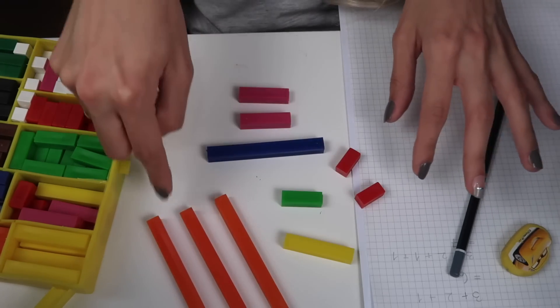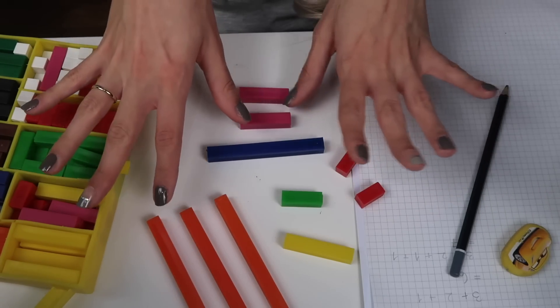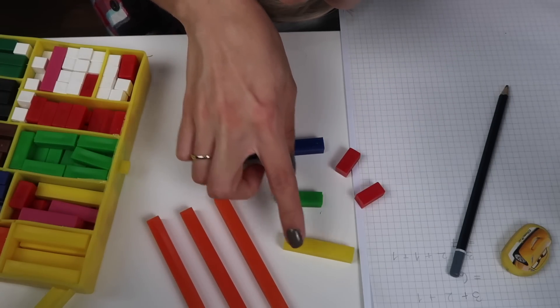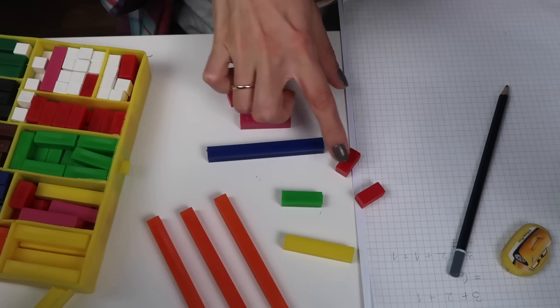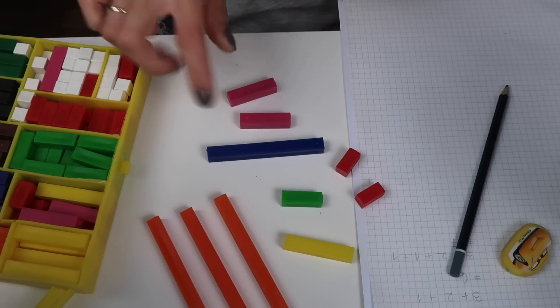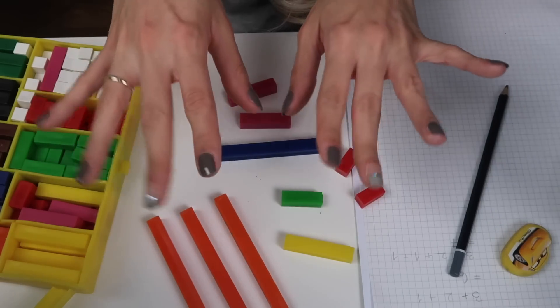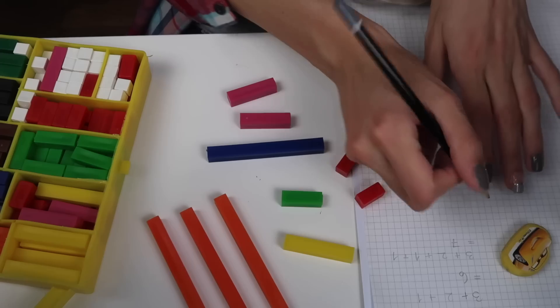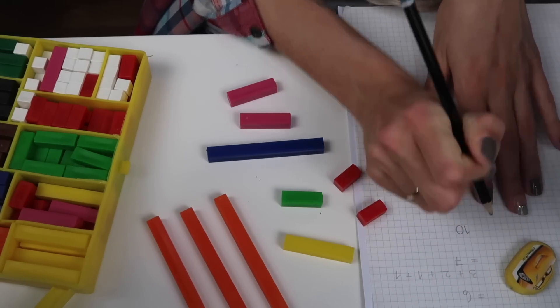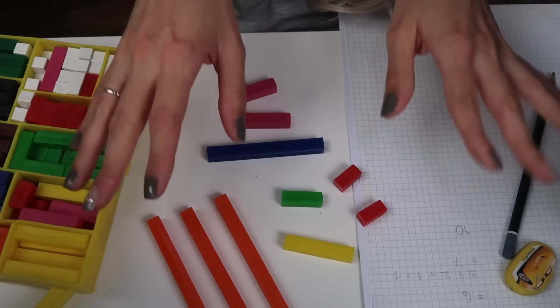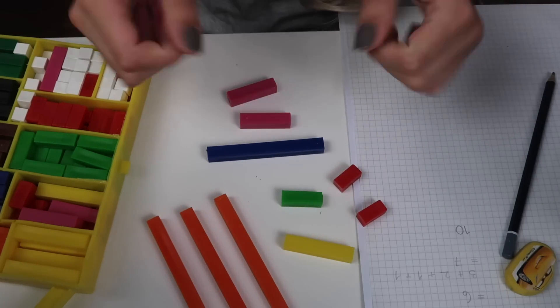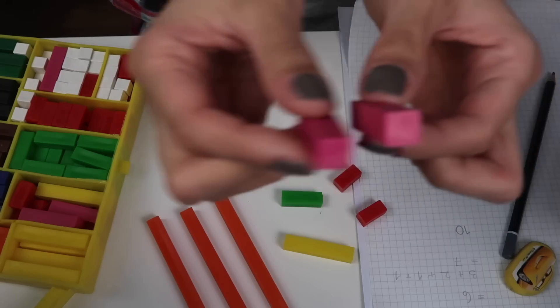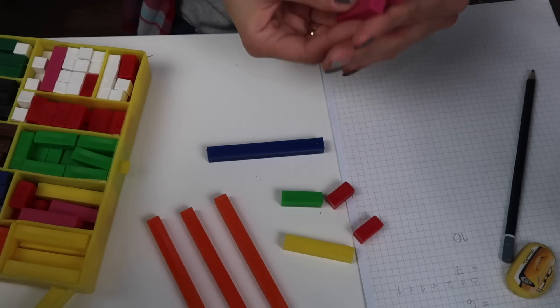So, let's add a yellow one just for fun. First of all, let's count how many we've got on the table. One, two, three, four, five, six, seven, eight, nine, ten. We've got ten little cubes, different size cubes. So, let's write that down. Ten. So, if I take away two of these pink ones, how many would I have left?